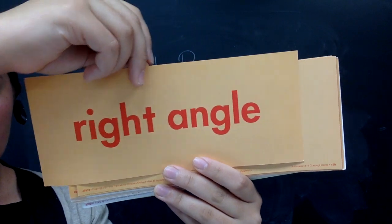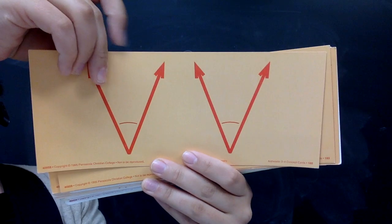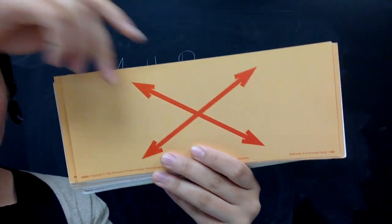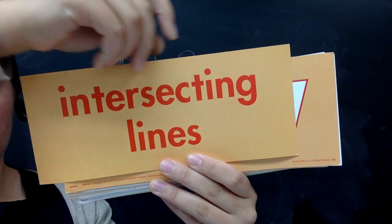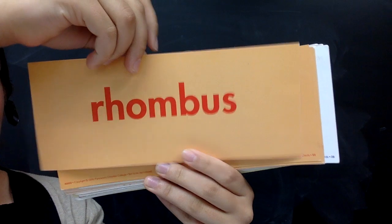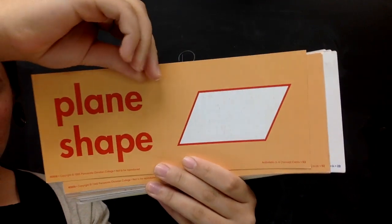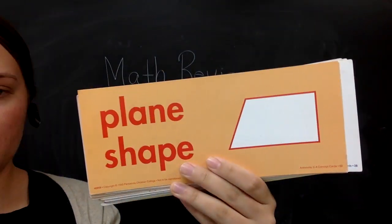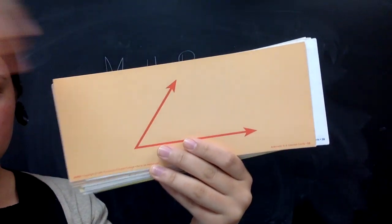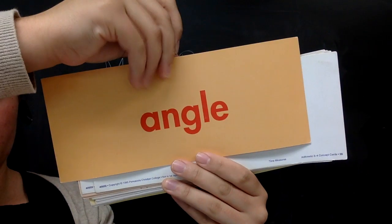Right angle. Congruent angles. Intersecting lines. Rhombus. Parallelogram. Trapezoid. Angle.